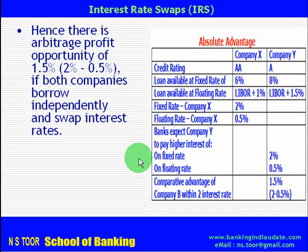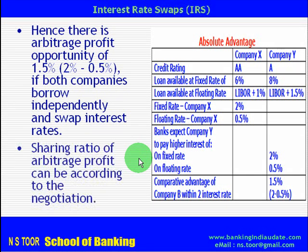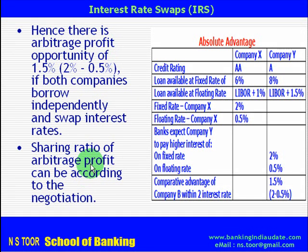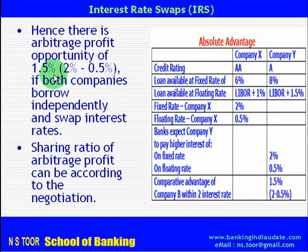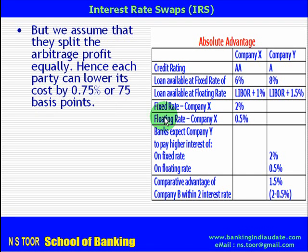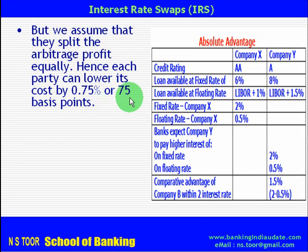Both companies can borrow independently and then swap that interest. Whatever arbitrage opportunity is there — that is, to make a profit — they can share that according to their negotiation. The arbitrage profit opportunity available is 1.5%. They can decide what should be the sharing ratio. For the purpose of our example, we assume they agree to share this advantage to the extent of 0.75% or 75 basis points each.